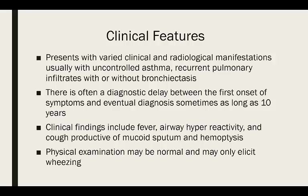In terms of clinical findings, it's not a single presentation pattern. It could present in multiple ways — for some people it's just uncontrolled asthma, and with a high index of suspicion you may find it. For others, bronchiectasis is found incidentally on imaging and eventually ABPA is diagnosed. Symptoms include those of asthma plus occasional fever, airway hyperreactivity, and cough productive of mucoid sputum — often viscous, brown, and dark-colored. Hemoptysis occurs but is relatively rare.